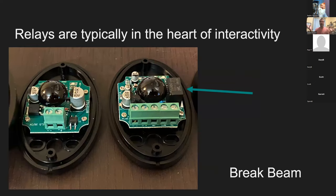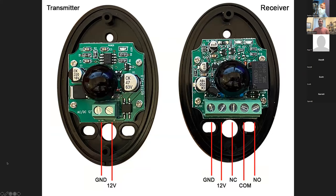The break beam also has a relay inside. As soon as that invisible beam is broken, it activates the relay, which can then trigger a GPIO pin. It has the same common, normally open, and normally closed terminals. You're seeing a pattern: all these input trigger types use a relay — a mechanical switch — to toggle the pins high or low.